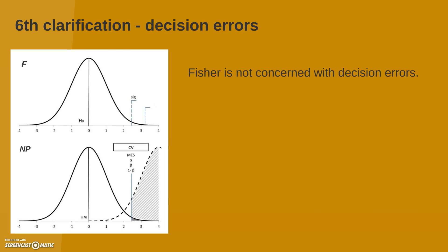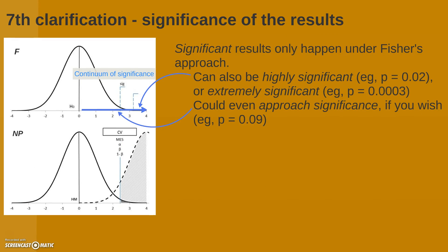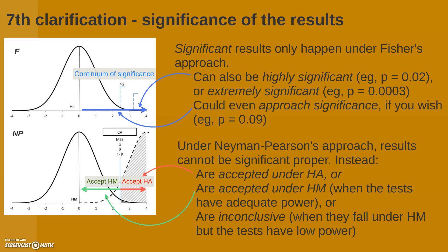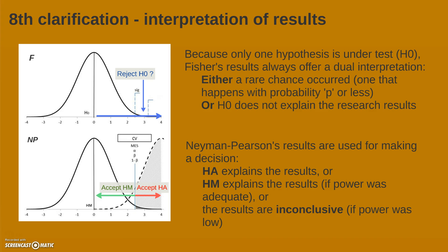A sixth clarification has to do with decision errors. Fisher is not concerned with decision errors at all, so this should be exclusive to Neyman-Pearson's approach — alpha, beta, and power are exclusive to Neyman-Pearson's. The seventh clarification has to do with the significance of the result. Significance only happens under Fisher's approach, and so we should use it only there. In the case of Neyman-Pearson's approach, the result is accepted under the alternative hypothesis, the main hypothesis, or is inconclusive — and this should be the concept used with this approach. An eighth clarification is how to interpret the results. For Fisher, it's either a rare chance occurrence, or the null hypothesis does not explain the results. For Neyman-Pearson, it's a decision regarding which hypothesis to accept, or inconclusive if that's the case.